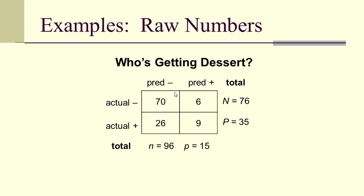For example, in the who's getting dessert data: 70 were actually negative and predicted negative; 6 were actually negative but predicted positive; 26 actual positives were predicted negative; and 9 actual positives were predicted positive. That gives us capital N of 76, capital P of 35 (the row sums), lowercase n of 96, and lowercase p of 15 (the column sums). Those correspond to our true negatives, false positives, false negatives, and true positives respectively.